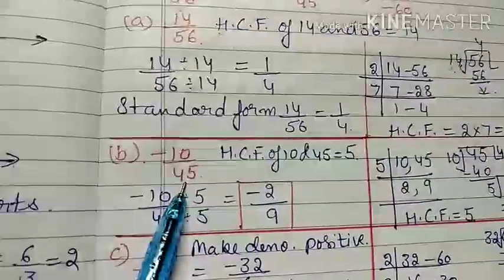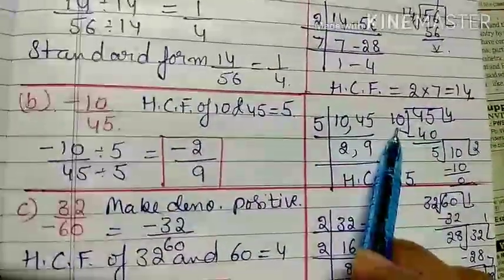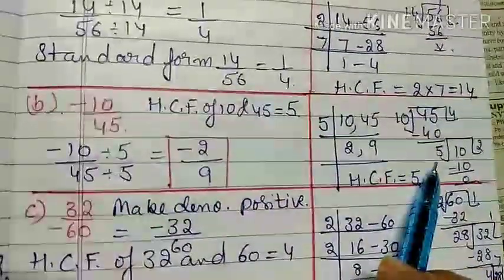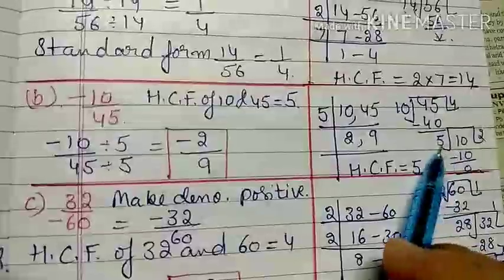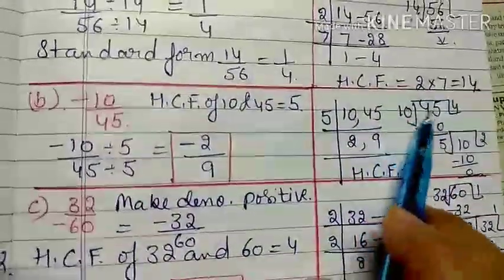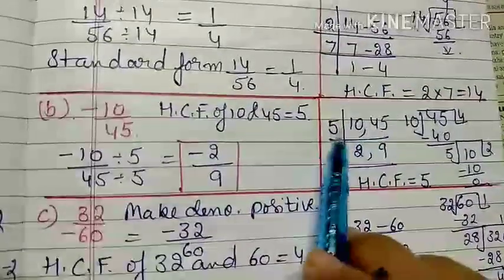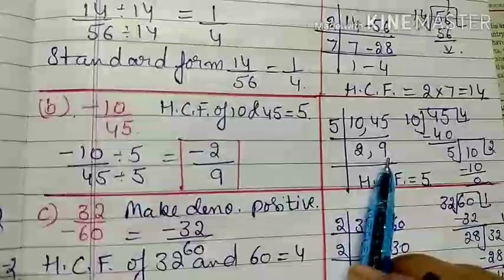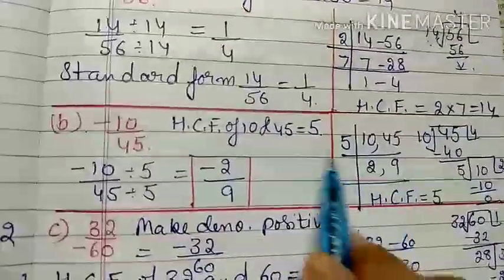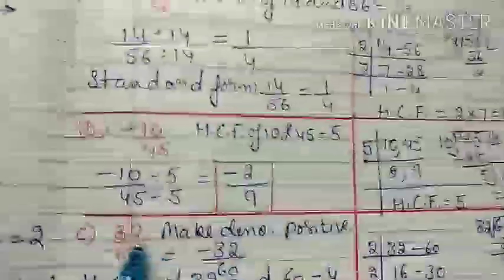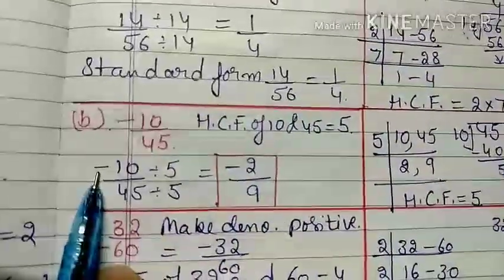For a negative rational number, the condition is the same — you still find the HCF. Using the division method for 10 and 45: 45 divided by 10 gives remainder 5; then 10 divided by 5 gives remainder 0, so 5 is the HCF of 10 and 45. Using the common factor method: 5 twos are 10, 5 nines are 45 — both come in the 5 table. Since 2 and 9 have no common table, the HCF is 5. Dividing gives minus 2 by 9.